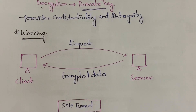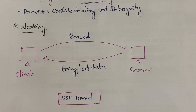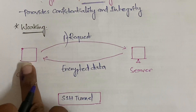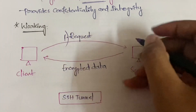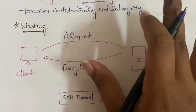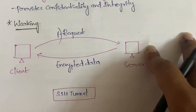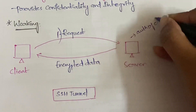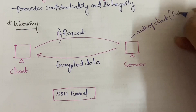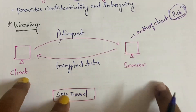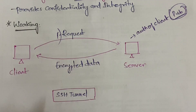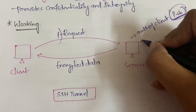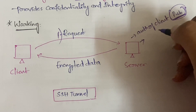Now let's see the working of SSH. First, the client sends a request to the server. Once the request is received, the server checks the authentication of the client using the public key — since the public key is available to everybody, it verifies whether the client's public key is correct or not.